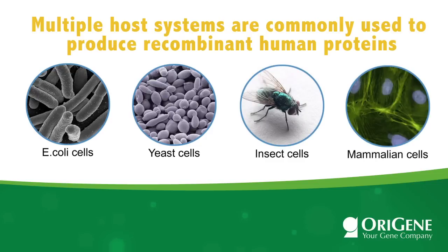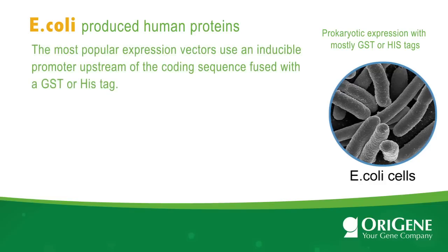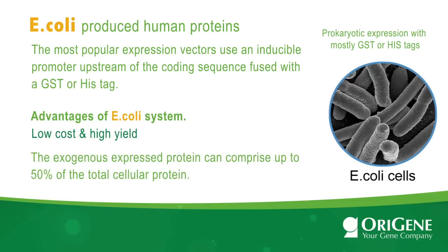Each system is unique and has advantages and disadvantages. E. coli is by far the simplest, quickest, and least costly way to express human proteins. The most popular expression vectors use an inducible promoter upstream of the coding sequence fused with a GST or His-tag. The advantage of the E. coli system is low cost and high yield — the exogenously expressed protein can comprise up to 50% of the total cellular protein.